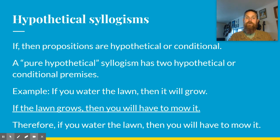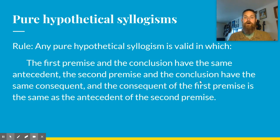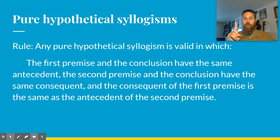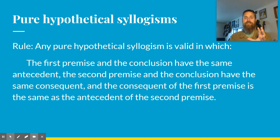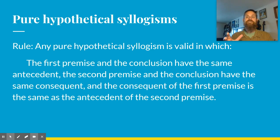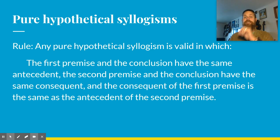How do we determine the validity of a pure hypothetical syllogism? Like disjunctive syllogisms, there's only one rule, but it's a little confusing. Test yourself to see if you recognize these terms: the first premise and the conclusion have the same antecedent; the second premise and the conclusion have the same consequent; and the consequent of the first premise is the same as the antecedent of the second premise.